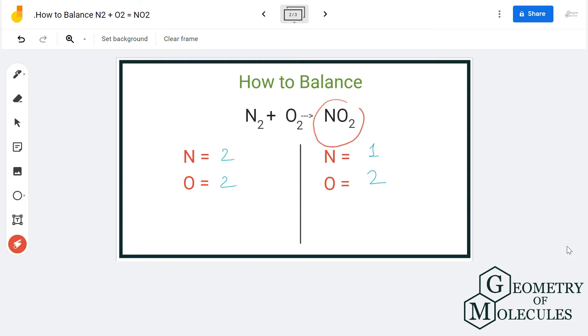So we now have two nitrogen atoms on this side as well but when we move to oxygen atoms over here we only have two oxygen atoms on the reactant side but four oxygen atoms on the product side. So to balance it out we will add two here for oxygen gas. So here we have N2 plus 2O2 which gives us 2NO2.